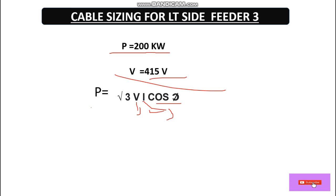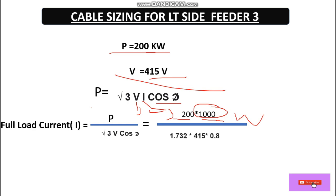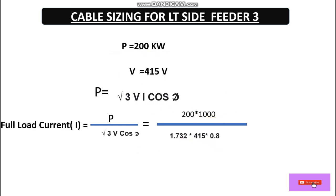Now let's calculate the full load current. The formula gives I = P ÷ (√3 × V × cosφ). Putting in the values: power is 200 kilowatt converted to 200,000 watts, divided by √3 (which is 1.732) × 415 volts × 0.85 power factor. After calculating, the full load current value becomes 348 amperes.